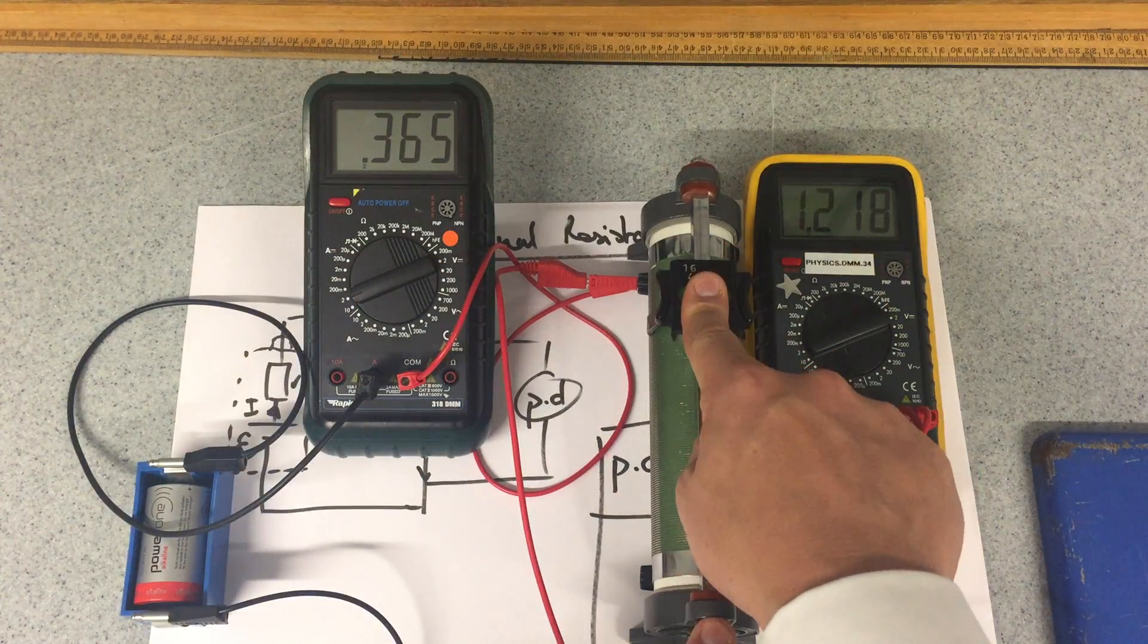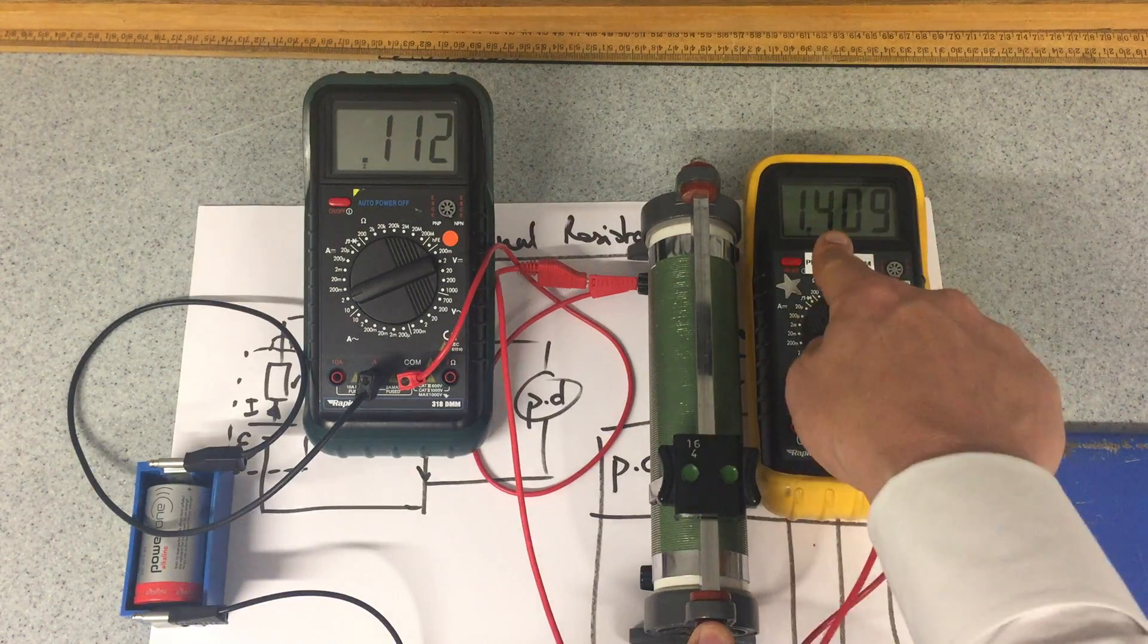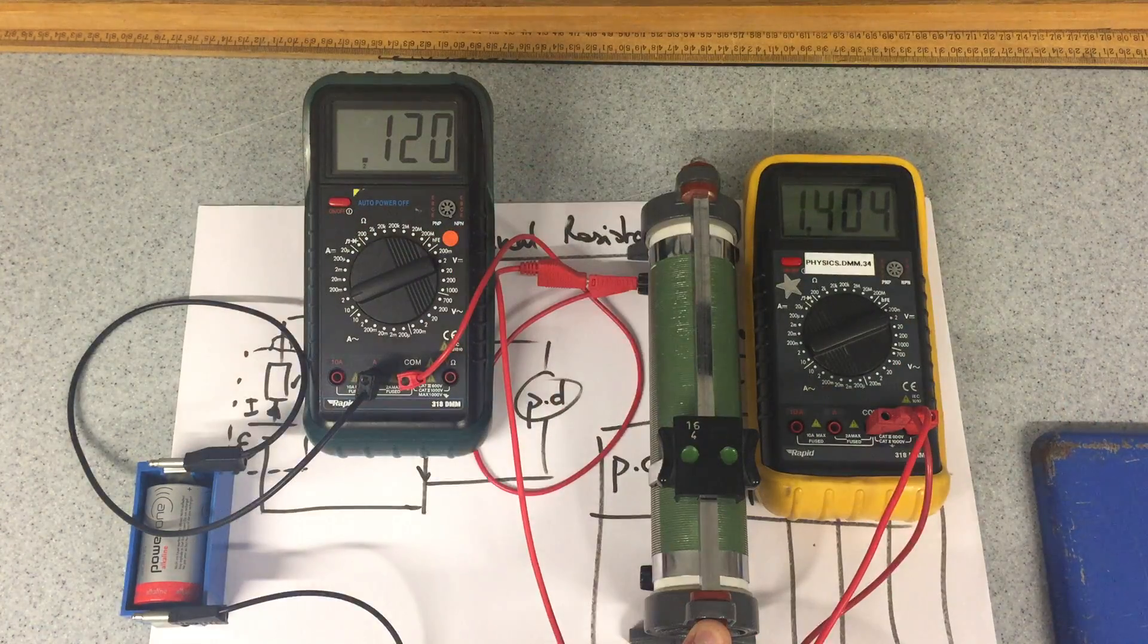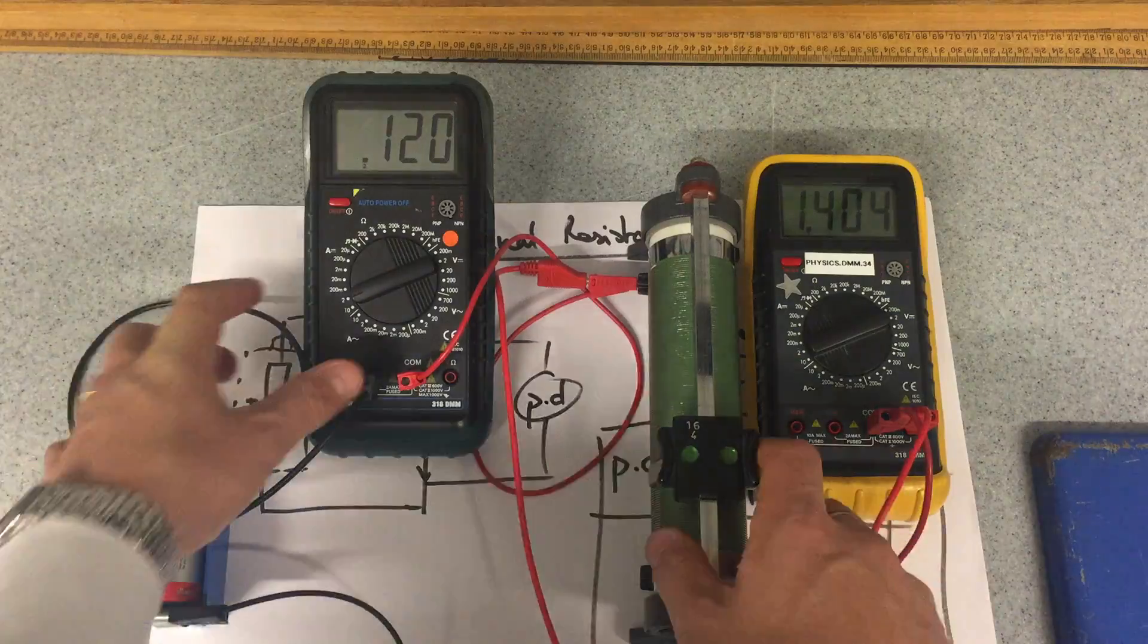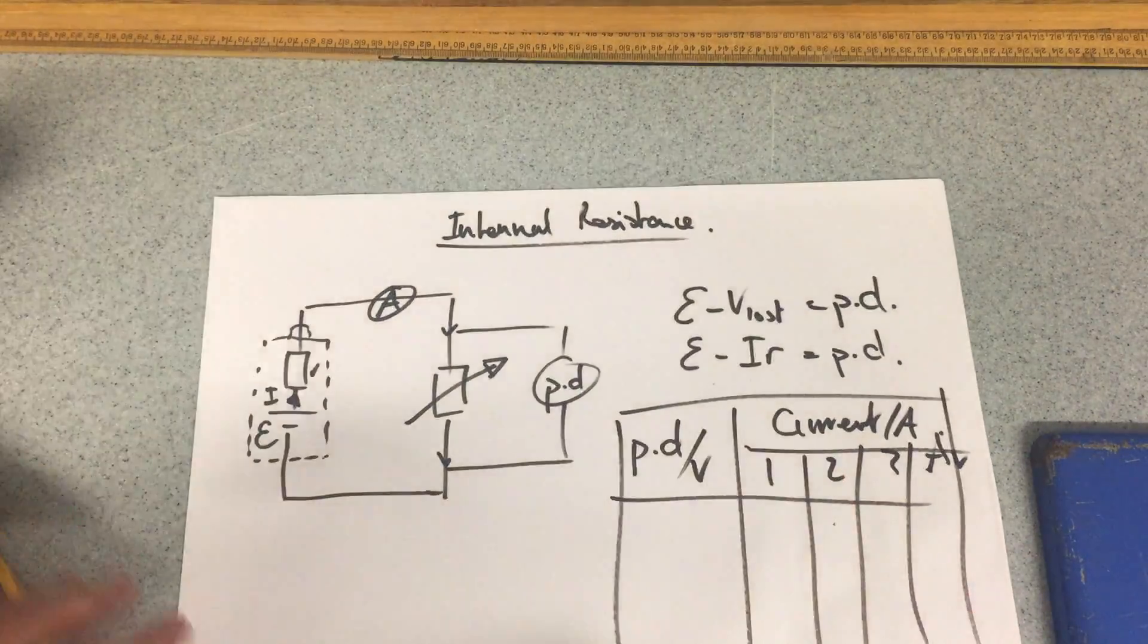But I've got my current, and so merely what I'm going to do is move it across to different positions where I know what the voltage is—my independent variable—and I'm measuring my dependent variable.